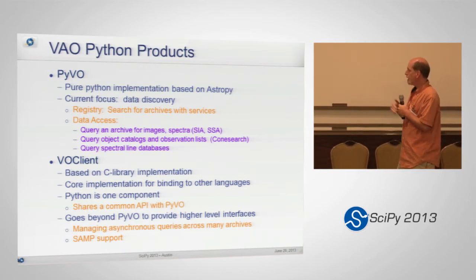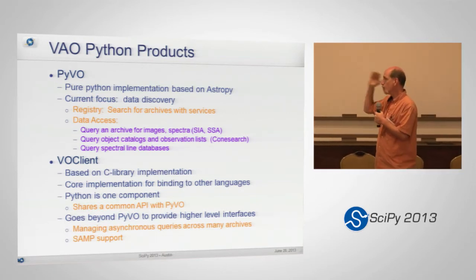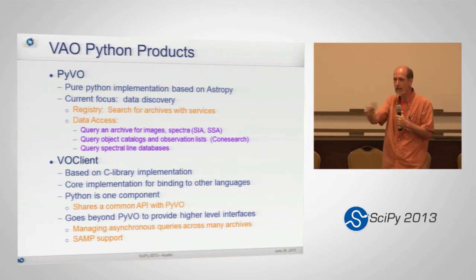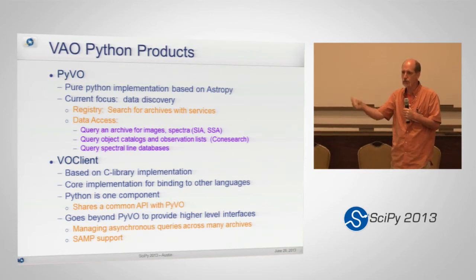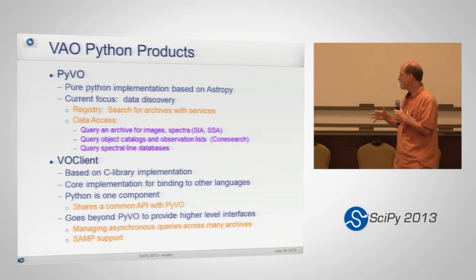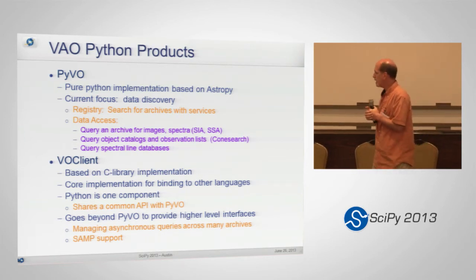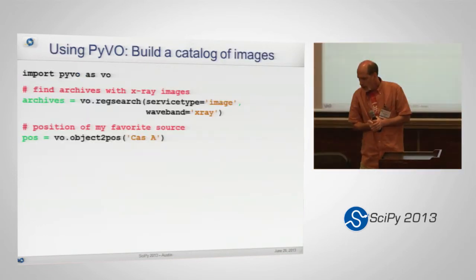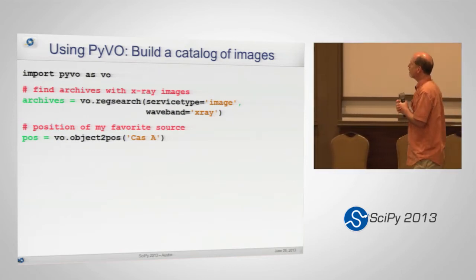Python is one of the languages we're binding to with VO Client. It shares a common API with PyVO but also goes beyond it with higher-level interfaces for more complicated tasks — collecting data from many archives, downloading asynchronously, managing caches, and communicating with other applications.